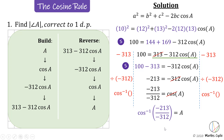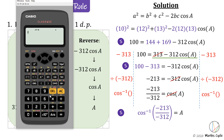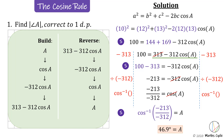Now use the calculator: press shift cosine, use the fraction button, enter negative 213 on top, down arrow to the denominator and enter negative 312, arrow out of the fraction, close brackets, and press equals. The answer is 46.9456. The question asks for one decimal place — the four is not greater than five so we round down. The measure of angle A is 46.9 degrees.